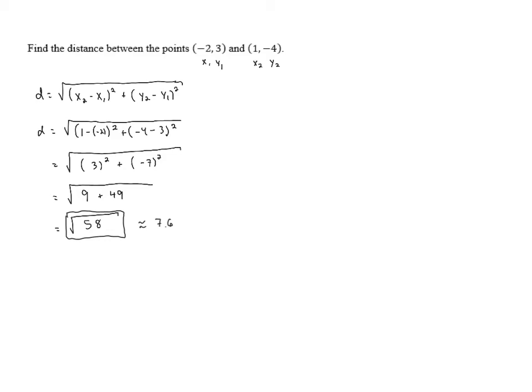Sometimes when we're dealing with distances, it makes sense to get an approximation, because if someone asked you how far it was to get from San Francisco to San Jose, it wouldn't really be helpful to tell them that it was the square root of 58 miles. It would make a lot more sense to say it's 7.6 miles.